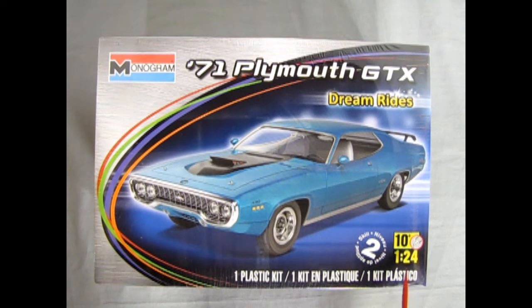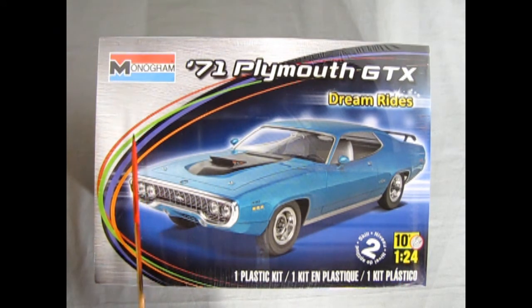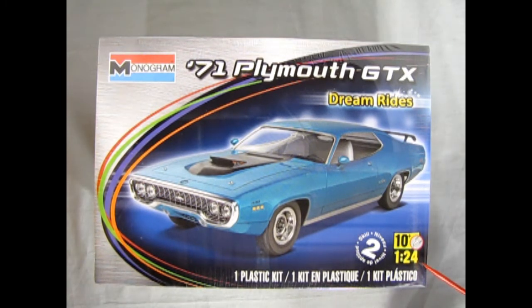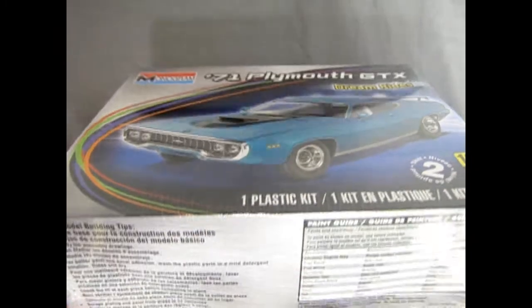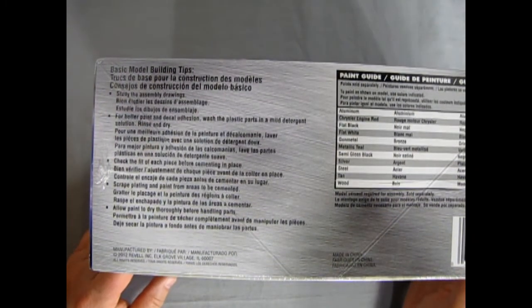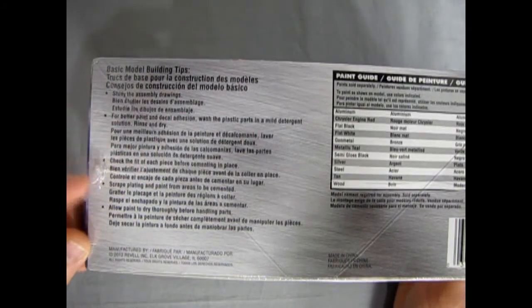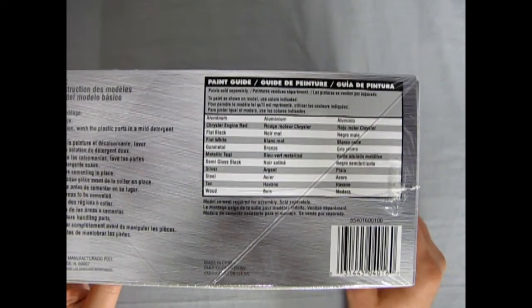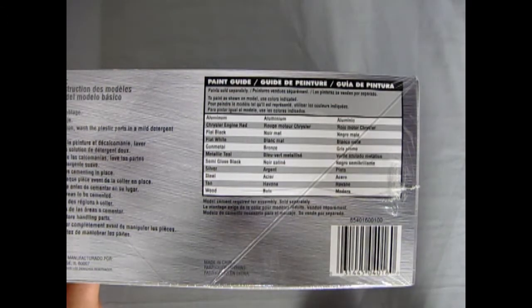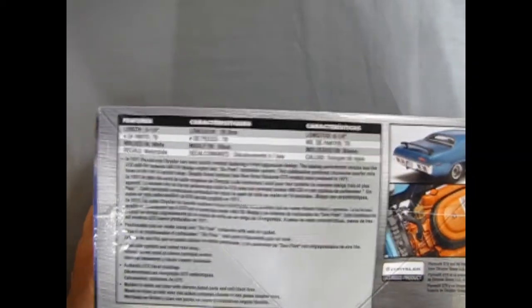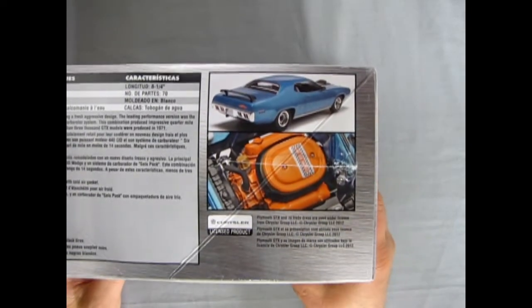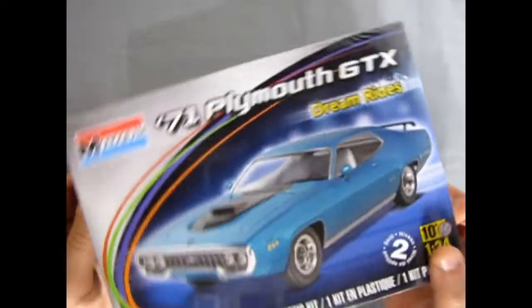This is a skill level 2 kit, 1:24 scale, which is the characteristic Monogram scale - most of their cars came in 24th instead of 25th. Ages 10 and up. This version came out in 2012, but this is an earlier model going back many years. There's all the write-up from the model as well as a paint guide right on the side of the box, which is nice for when you're in the hobby shop. There's more write-up and this nice image of the 440 six-pack and the back of the car.